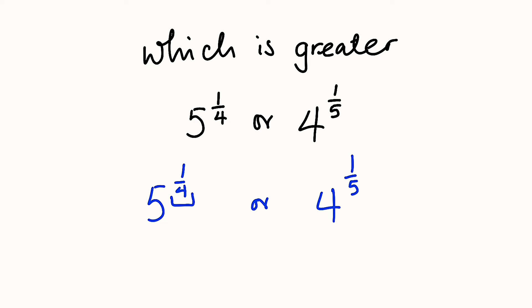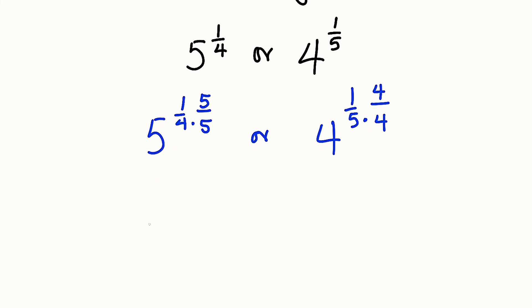To make 4 twenty, we need to multiply it by 5, so we multiply this by 5. For equivalency, we multiply the top number by 5. To make this 20, we need to multiply it by 4. We have to multiply the top number by 4, so we have 5 to the power of 5 over 20.